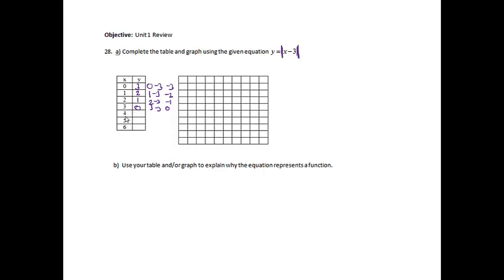0, 0, there we go. 4, 4 minus 3 is 1. The absolute value of 1 is 1. 5, 5 minus 3 is 2. The absolute value of 2 is 2. And 6, 6 minus 3 is 3. The absolute value of 3 is 3. So we are ready to graph it now.